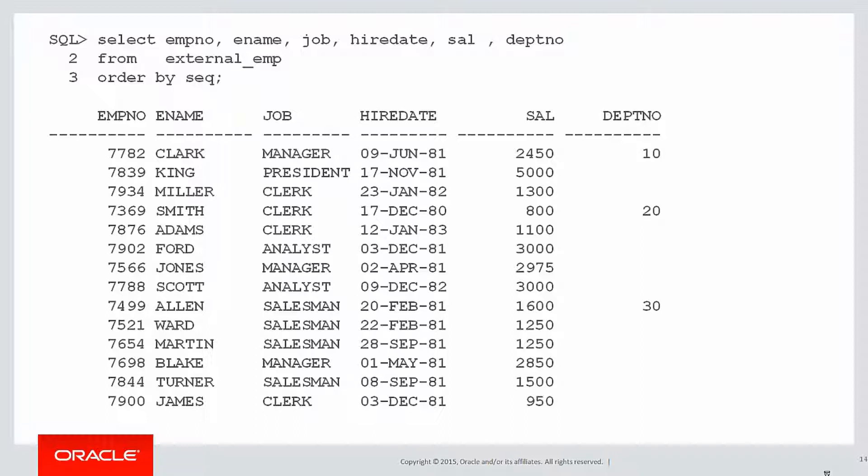That's not saying that some of these employees have no department. What it is is we're implying that the department number should roll down the screen. So effectively, the first three rows would be 10, the next five rows would be 20, and the next six rows would be 30. We need a way of filling in the blanks.